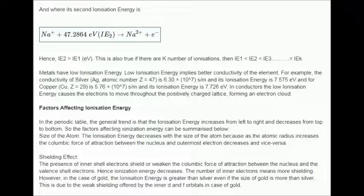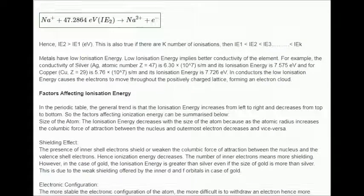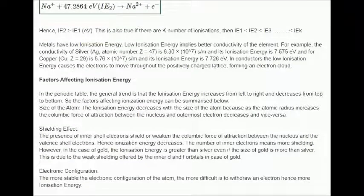However, in the case of gold, the ionization energy is greater than silver even if the size of gold is more than silver. This is due to the weak shielding offered by the inner d and f orbitals in case of gold.